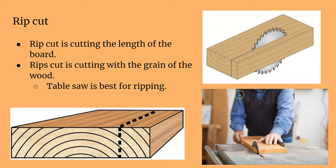A rip cut is when you rip a board with the grain. The grain is all going this way and the saw blade is going with the grain, making a rip cut.